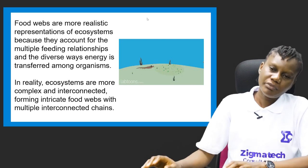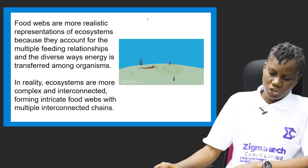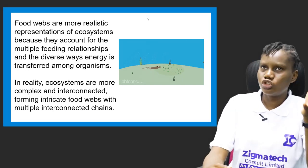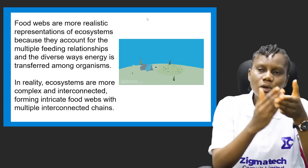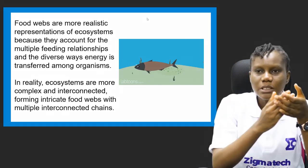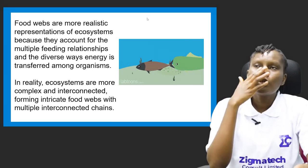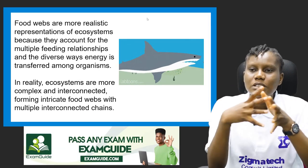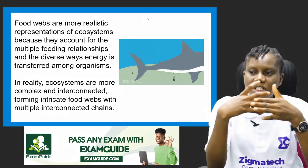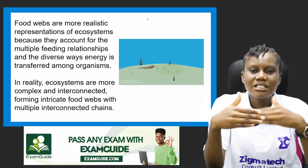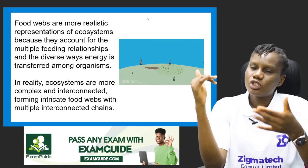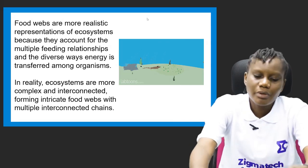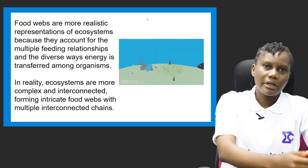We have come to the end of today's lesson. We looked at ecology, defined it, and examined its key concepts. We covered organisms and their key points, population, community and the interactions within it, trophic levels, and we saw that every organism is interdependent and interconnected with each other.